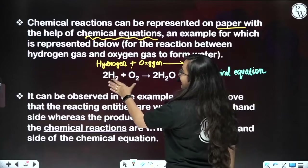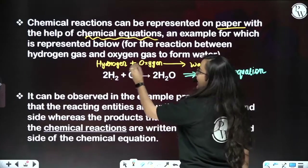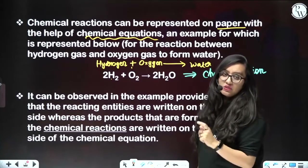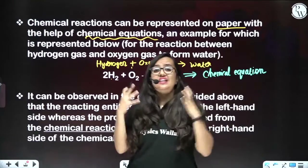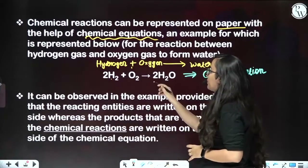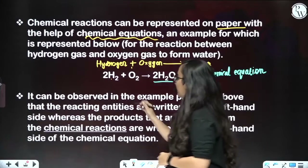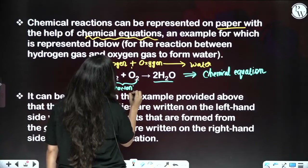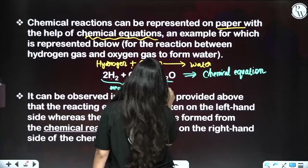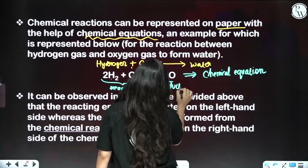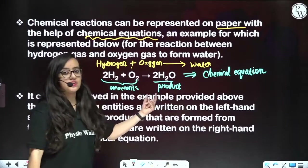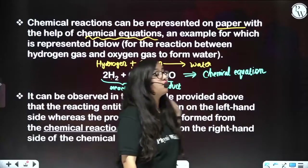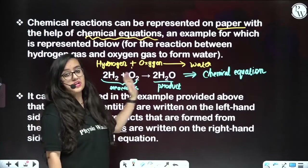H2 and O2, which are on the left side of the arrow, are known as reactants because they are reacting with each other and giving a product. Both H2 and O2 are reactants. On the right-hand side is the product. The reaction is going from reactant to product, so this is the forward direction.